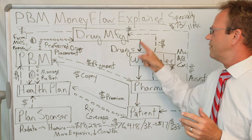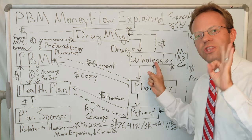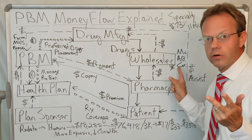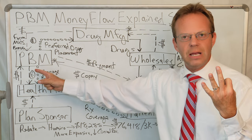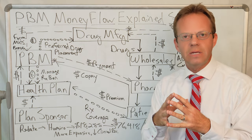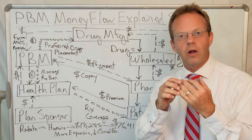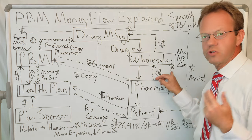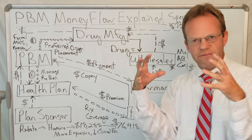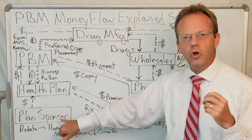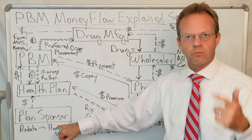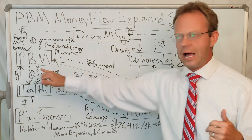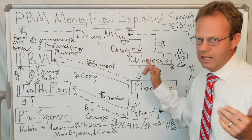The drug manufacturer sends drugs to the wholesaler. Note that there are only three major wholesalers in America: McKesson, AmerisourceBergen, and Cardinal. And on the PBM side, there are really only three PBMs that control 85% of the PBM market: CVS Caremark, Express Scripts Cigna, and OptumRx. Those are areas of oligopolies where you have very few options. The golden rule for the plan sponsor — when it comes to PBMs, you don't have a lot of options. And when it comes to wholesalers, the pharmacy doesn't have a lot of options either.